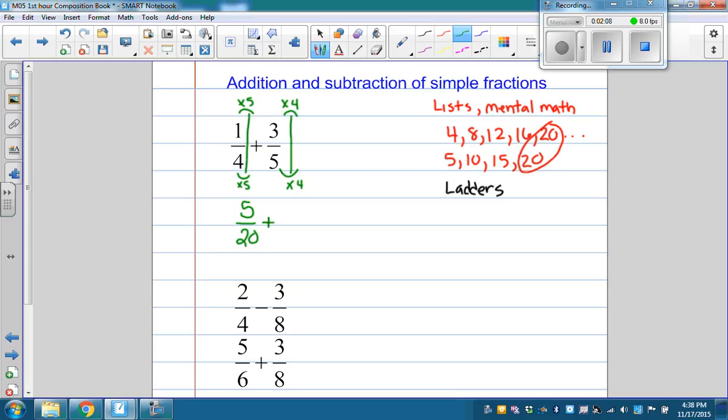Bring down the addition sign. And similarly, 5 times 4 is 20. So you could also do it in here. 3 times 4 is 12. So you're going to add 12 twentieths to 5 twentieths. And so all together, we get 17 twentieths.